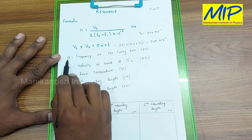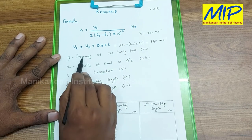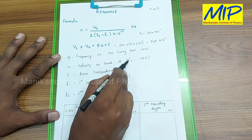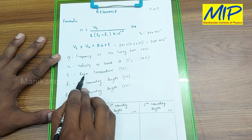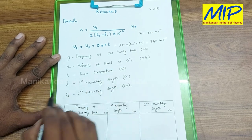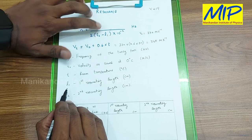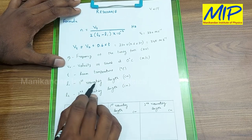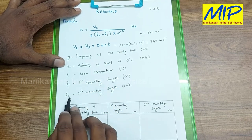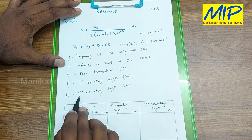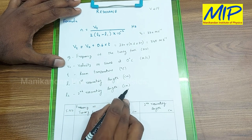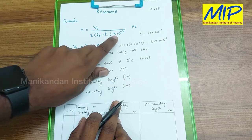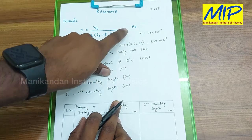N is the frequency of the tuning fork. V0 is the velocity of sound at 0 degrees Celsius. T is the room temperature. L1 is the first resonating length in centimeters, and L2 is the second resonating length in centimeters. To convert from centimeters to meters, we use 10 power minus 2.